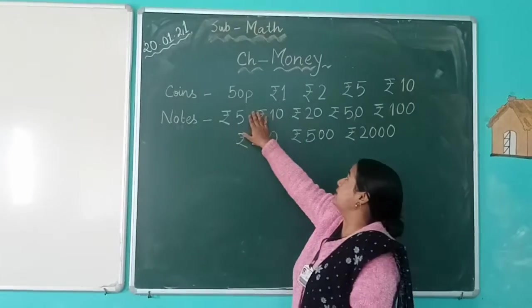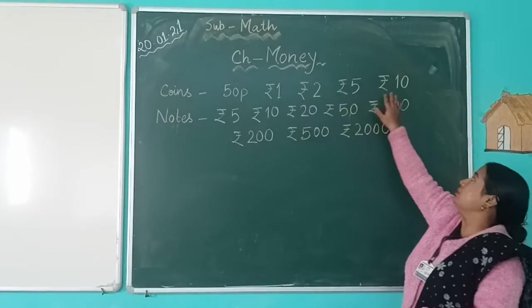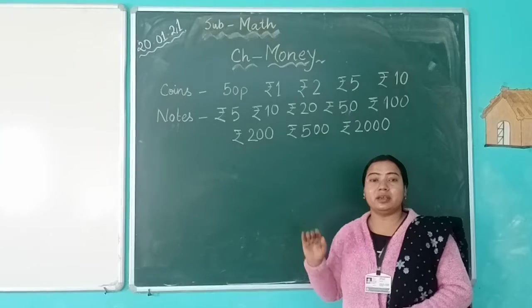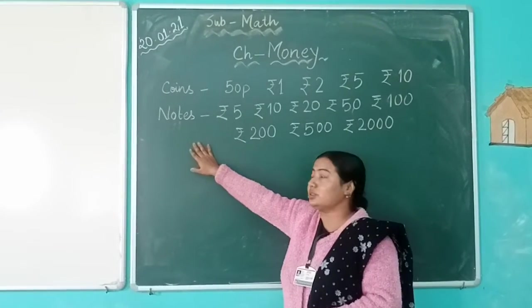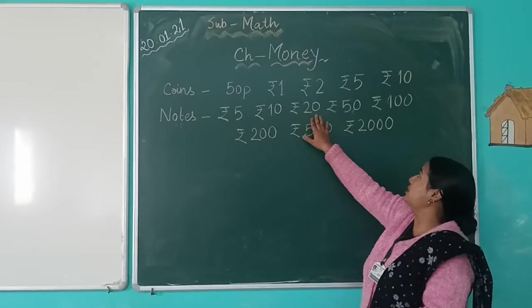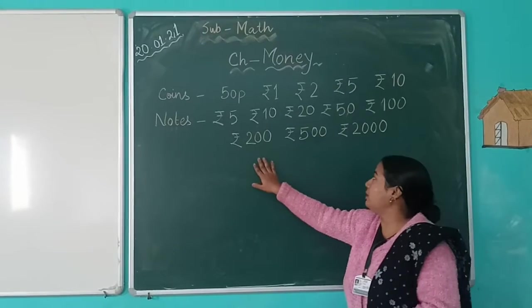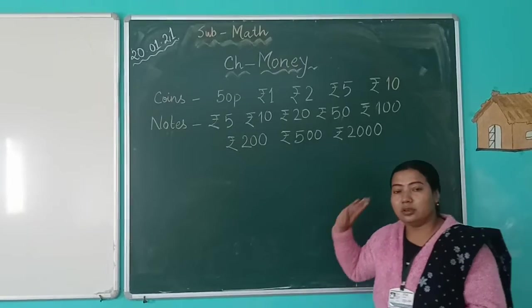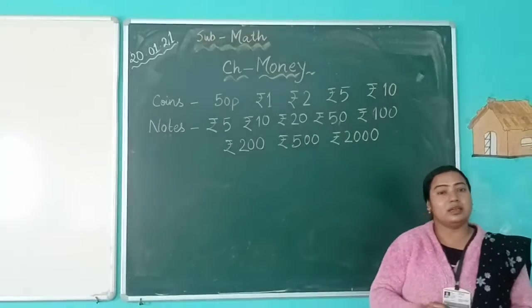That is 50 paisa, rupees 1, rupees 2, rupees 5, rupees 10. These are the coins which are used. And the notes which are used: rupees 5, 10, 20, 50, 100, 200, 500, and 2000. These are the notes which are now used.